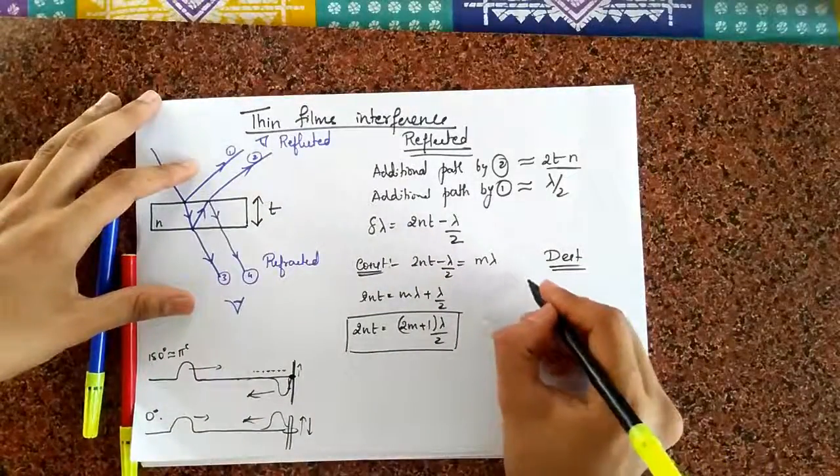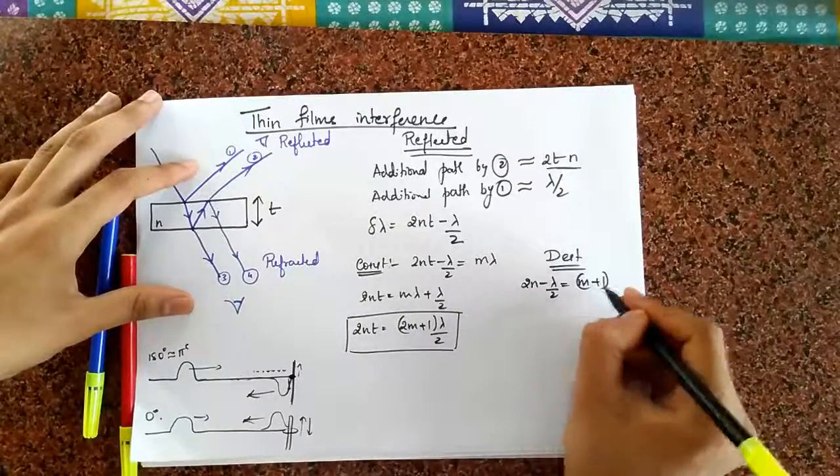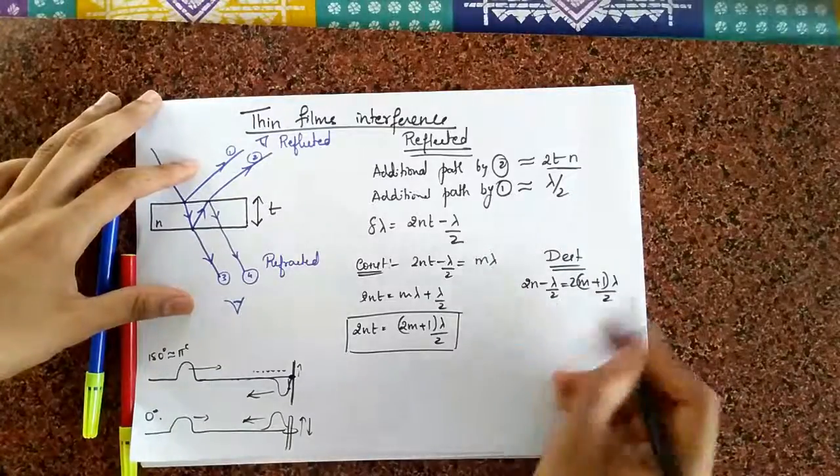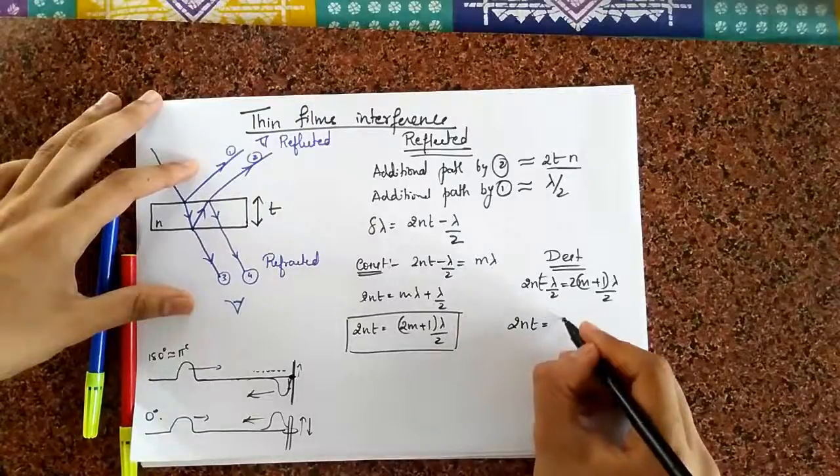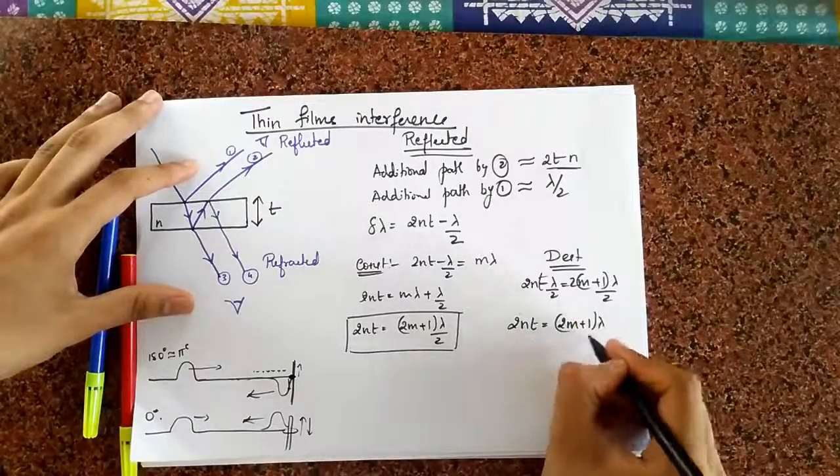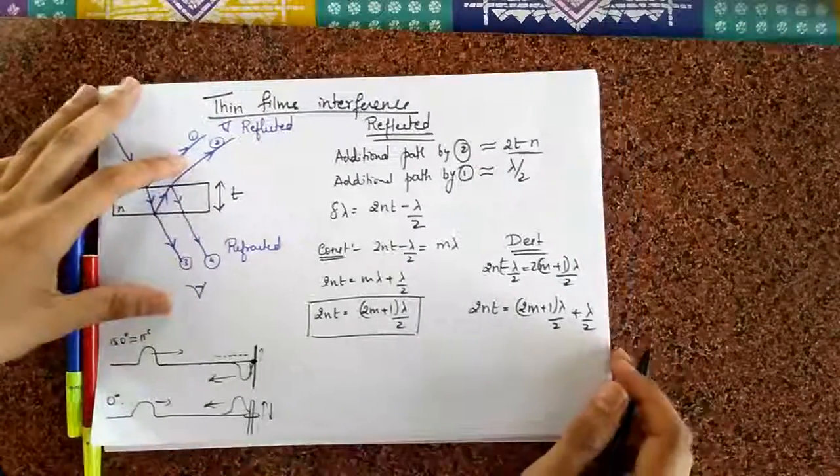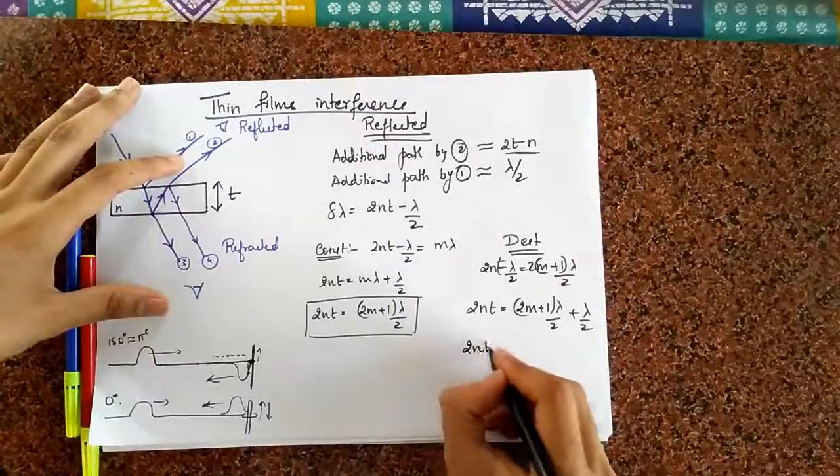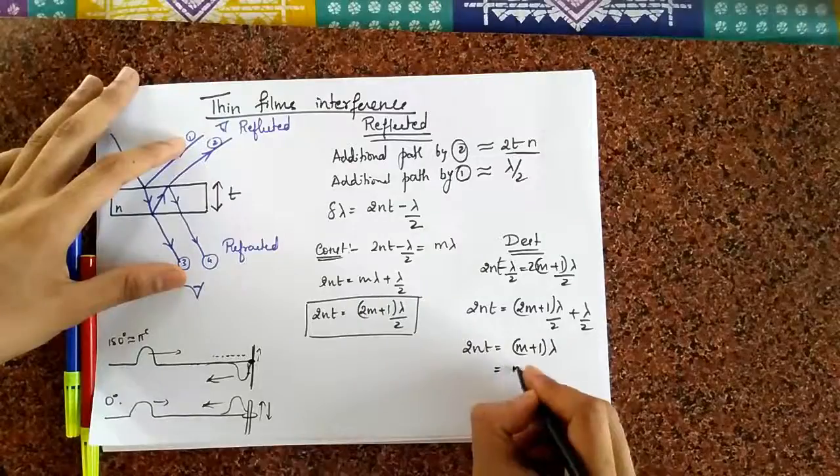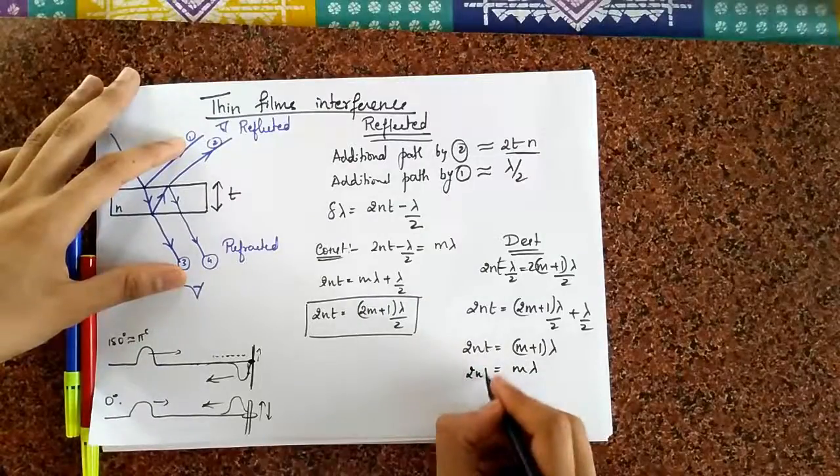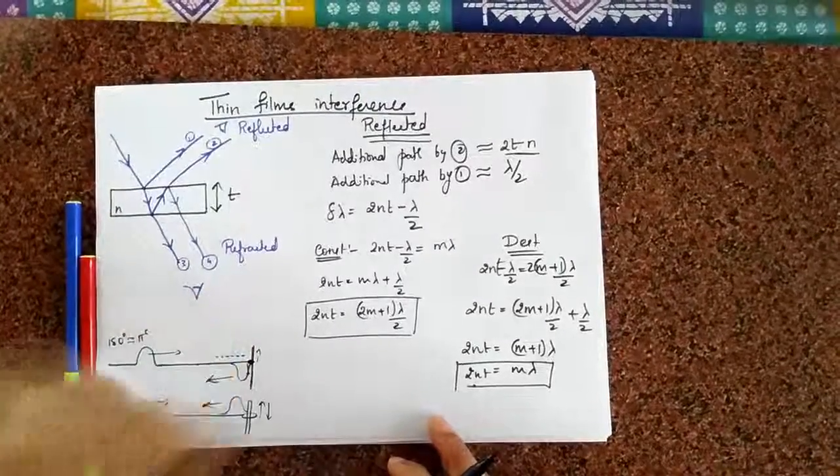And, for destruction, the path difference must be equal to 2m plus 1 lambda by 2. And so, it goes over there. Here, I get 2nT is equal to 2m plus 1 lambda by 2 plus lambda by 2. That gives me 2m plus, that gives me m plus 1 lambda by 2. Is equal to m plus 1 lambda. But, m plus 1 is just an integer. It doesn't matter. It's called as now m lambda. So, some integer times lambda. So, that's what you get if you have a reflected system.